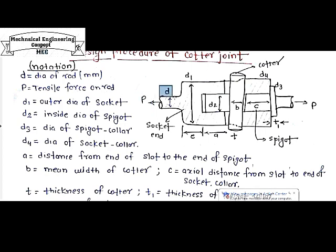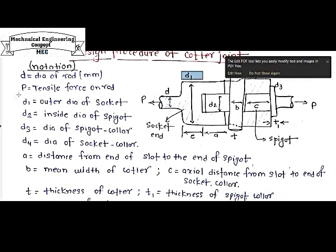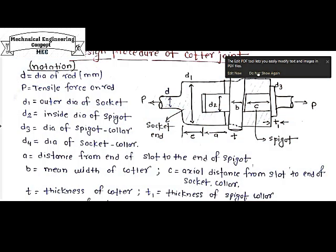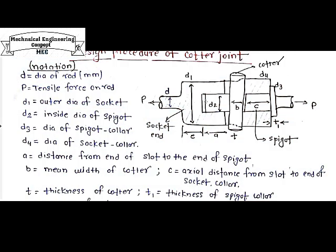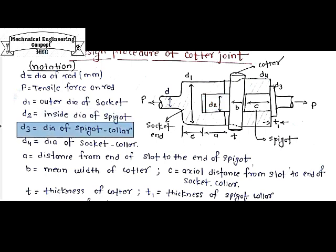Small d is the diameter of the rod on both ends. D1 is the outer diameter of the socket. D2 is the inner diameter of the spigot. D3 is the spigot collar diameter. D4 is the socket collar diameter. The collar end of the spigot is used to support the socket and spigot with the help of the collar.